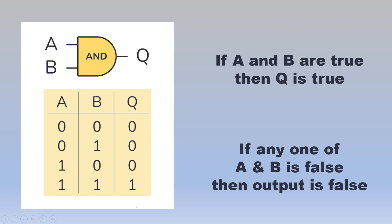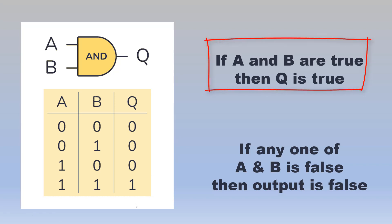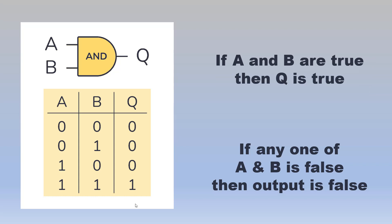So if A and B are both true, then only the value of Q — that is the output — is true. If any one of the inputs A or B is false, then the output is false. This is the logic of the AND gate.